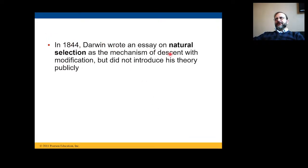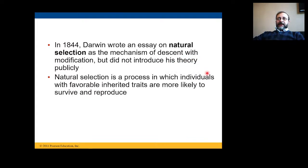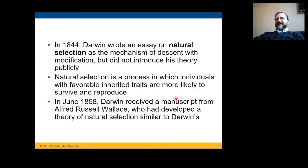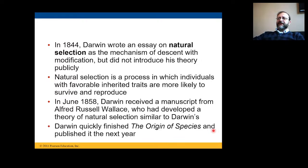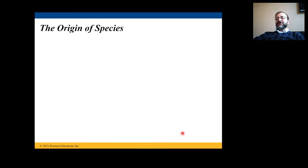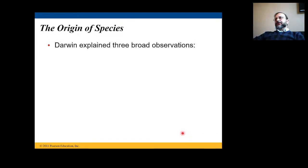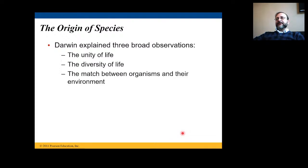In 1844, Darwin wrote an essay on natural selection as the mechanism of descent with modification but did not introduce his theory publicly. Natural selection is a process in which individuals with favorable inherited traits are more likely to survive and reproduce. In June 1858, Darwin received a manuscript from Wallace, who had independently developed a theory of natural selection similar to Darwin's. Darwin quickly finished Origin of Species and published it the next year. Darwin explained three broad observations: the unity of life, diversity of life, and the match between organisms and their environment — which we call adaptation.